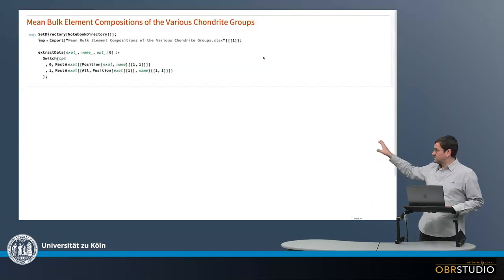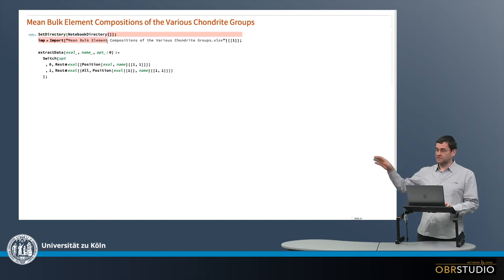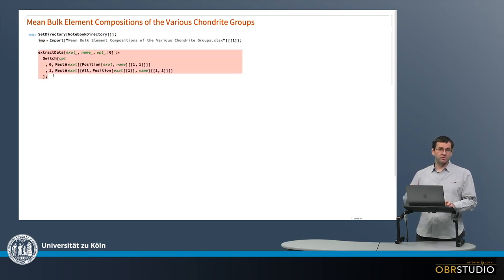So I want to show just briefly how we can use a program like Mathematica, for example, to very quickly look at these data. So in this program, the first two lines just import this data set and then the values of the data set are stored in this imp value here. And this is one command with which I can conveniently extract individual columns from this data set. So I execute this.